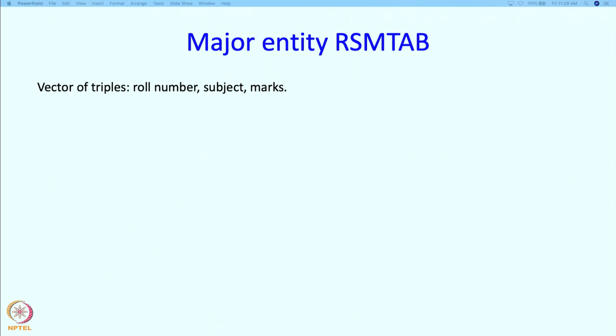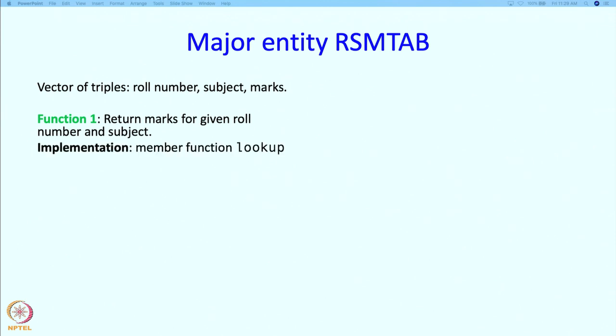The RSM tab is a vector and it stores triples which consist of the role number, subject and marks. The first function that this table or this entity or this struct is going to perform is that it will return the marks given the role number and the subject. The implementation is going to happen in the member function lookup. I have used the same name lookup here — it should not be confused with the lookup in RN tab. Here the lookup is looking up the marks given the role number and the subject, whereas over there we were looking up the role number given the name.